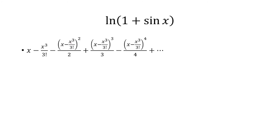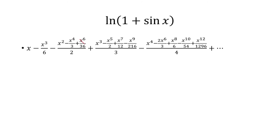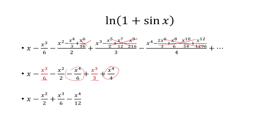Now we expand the inside. Each term expands, getting larger, but we don't care about anything beyond x to the fourth, so we cancel all higher terms. Keeping only up to x to the fourth, we have x minus x cubed over 6, minus x squared over 2, plus x cubed over 3, minus x to the fourth over 4. Simplifying the x cubed terms and the x to the fourth terms, we get x minus x squared over 2 plus x cubed over 6 minus x to the fourth over 12. That is our final answer.